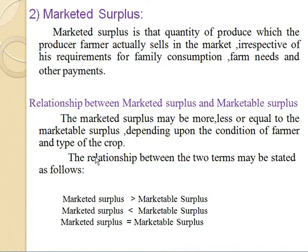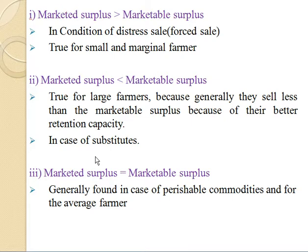The relationship between marketable surplus and marketed surplus: the marketed surplus may be more, less, or equal to the marketable surplus — it depends upon the condition of the farmer and the type of crop. First condition: when marketed surplus is greater than marketable surplus. This occurs when the farmer retains a smaller quantity of the crop than his actual requirements for family and farm needs, meaning he actually sells more. This condition holds in cases of distress sales and is true for small and marginal farmers.